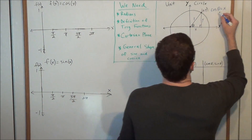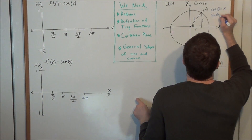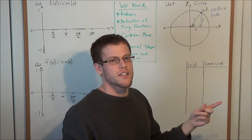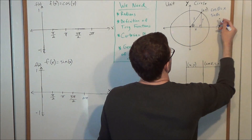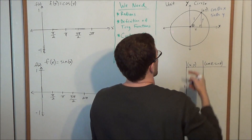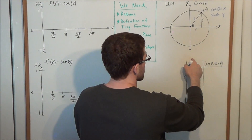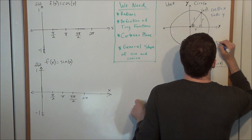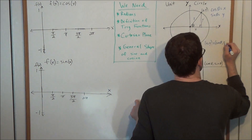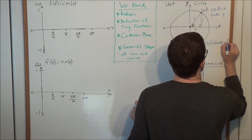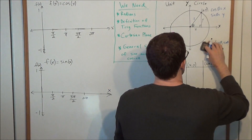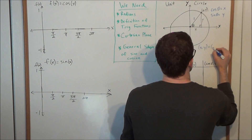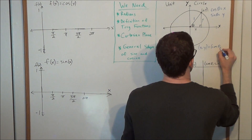Next we can also look at sine of angle theta. Sine is equal to the ratio of the opposite side divided by the hypotenuse. So the opposite of angle theta is y, divided by the hypotenuse 1. So now instead of looking at points in terms of x, y, using this unit circle, we can look at them in terms of cosine theta, sine theta. We're going to be looking at x, y as cosine theta and sine theta.